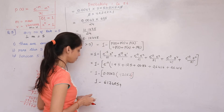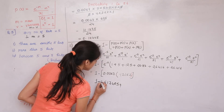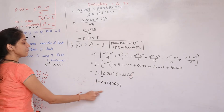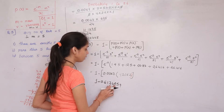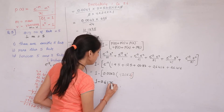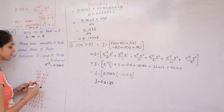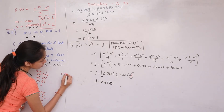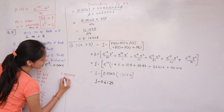For the third condition, P(5 ≤ X ≤ 7) means finding P(X=5) + P(X=6) + P(X=7). The answer will be in decimal form. This third part of question 5 is left as homework for practice.